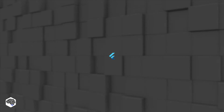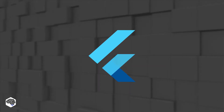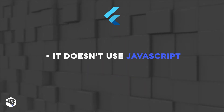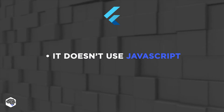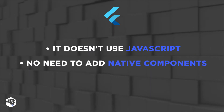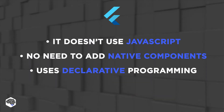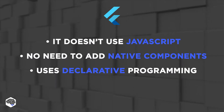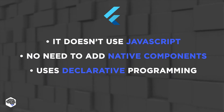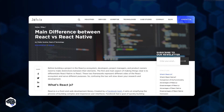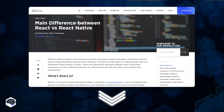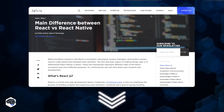Wondering how it compares to other similar SDKs? First of all, Flutter doesn't use JavaScript. There is no need to add native components. Flutter uses declarative programming, similar to React Native. The code weighs less and is faster to write. You can also check out our comparison of React Native and React if you follow the link in the description box.